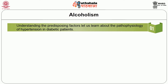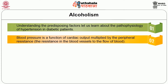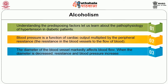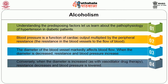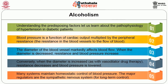Understanding the predisposing factors, let us now learn about the pathophysiology of hypertension in diabetic patients. Blood pressure is a function of cardiac output multiplied by peripheral resistance, which is the resistance in the blood vessels to the flow of blood. The diameter of the blood vessel markedly affects blood flow. When the diameter is decreased, as in atherosclerosis, resistance and blood pressure increase. Conversely, when the diameter is increased, as with vasodilator drug therapy, resistance decreases and blood pressure is lowered.